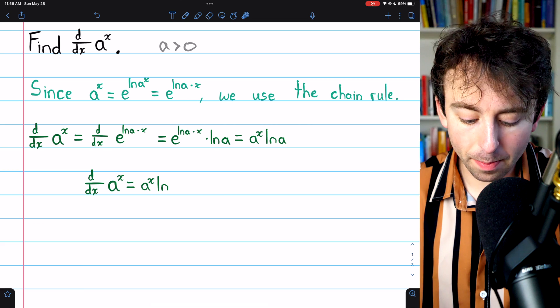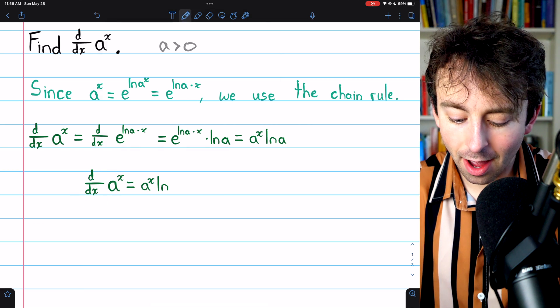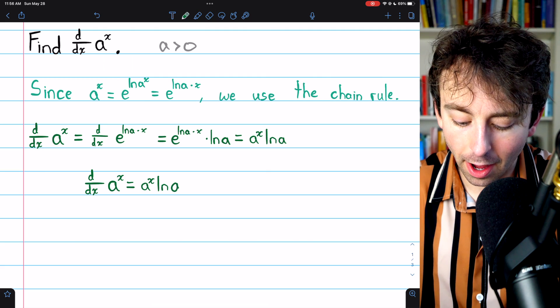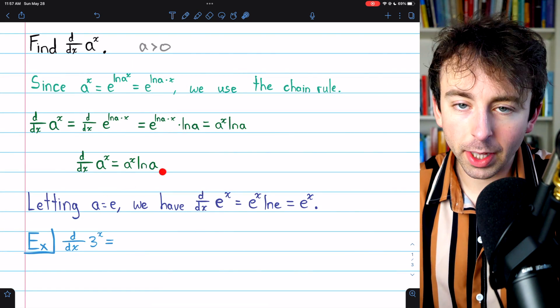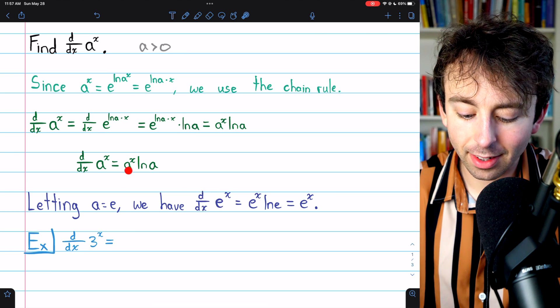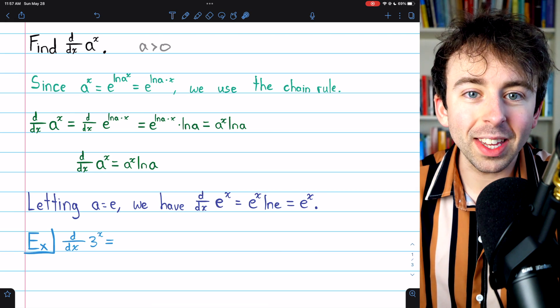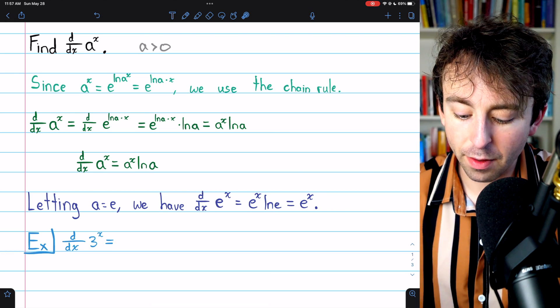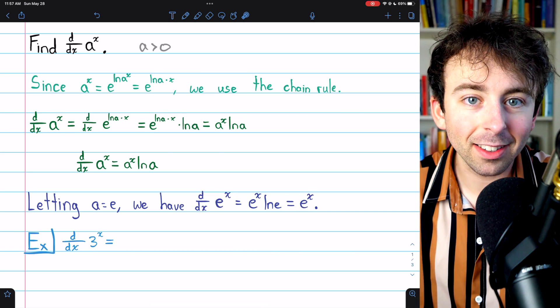For any positive number a, the derivative of a to the x is a to the x times the natural log of a. And if we let a equal e in this formula, we get a familiar equation. The derivative of e to the x is e to the x times the natural log of e. Of course, the natural log of e is just 1. And so we have the familiar result that the derivative of e to the x is e to the x.